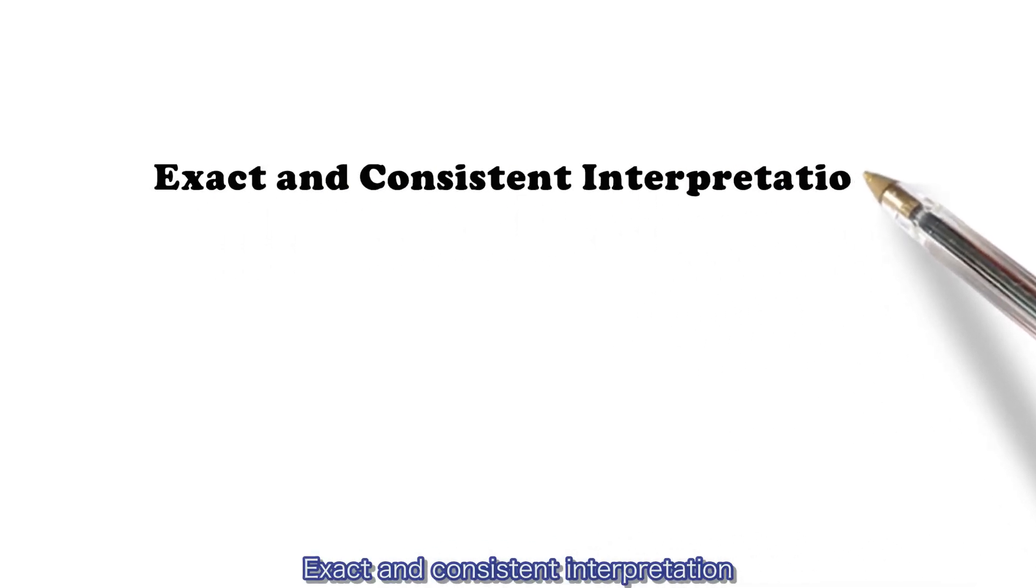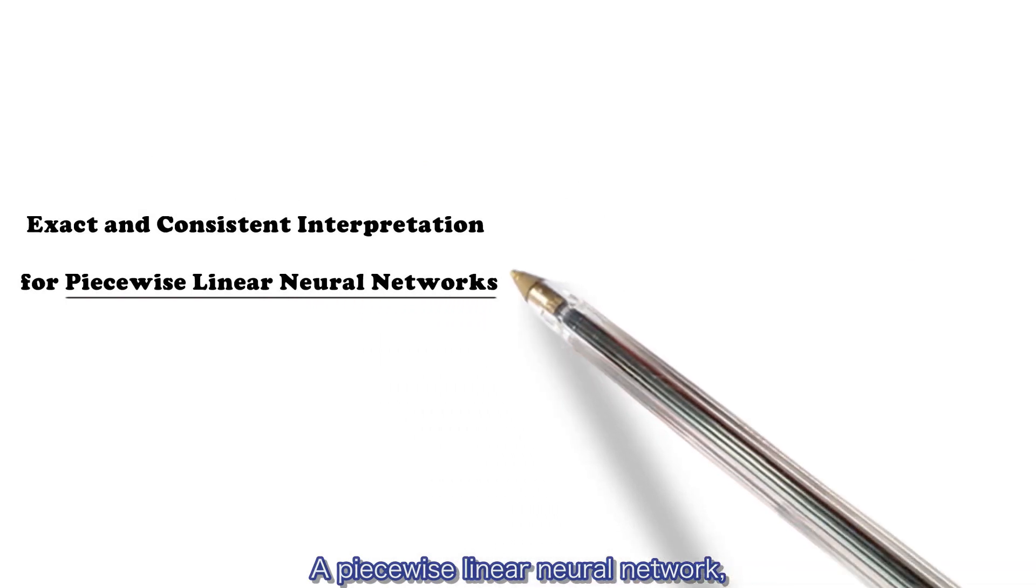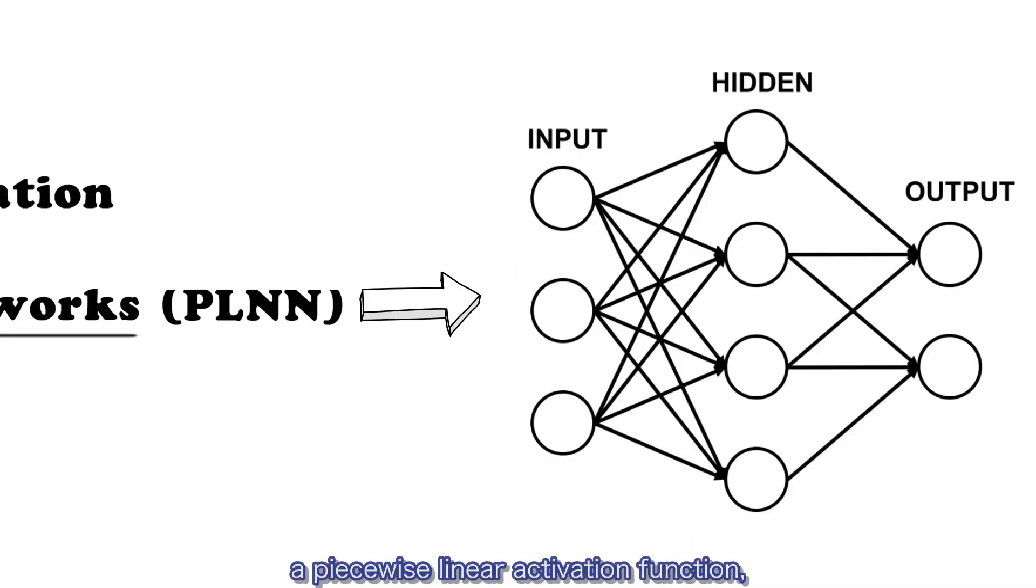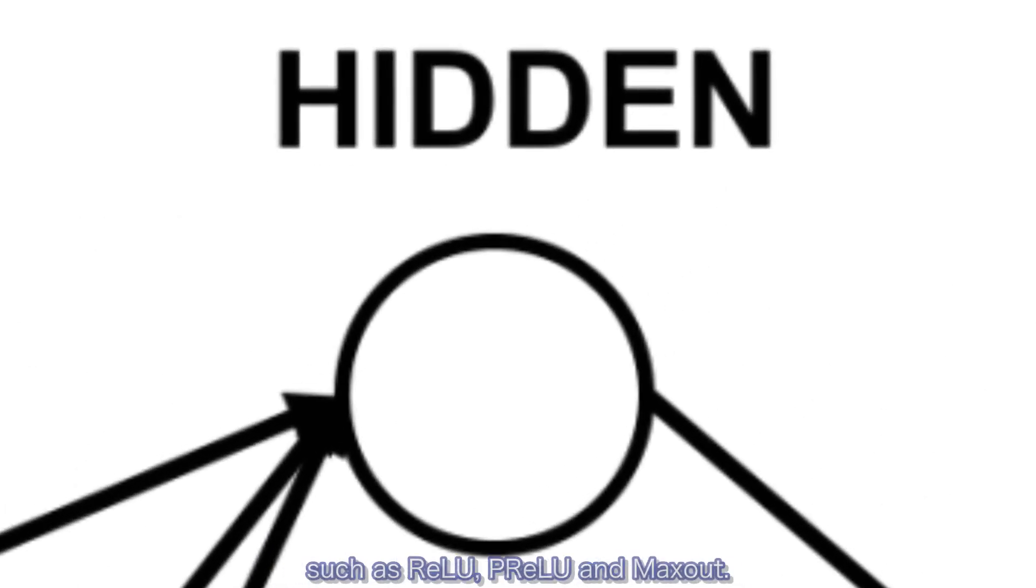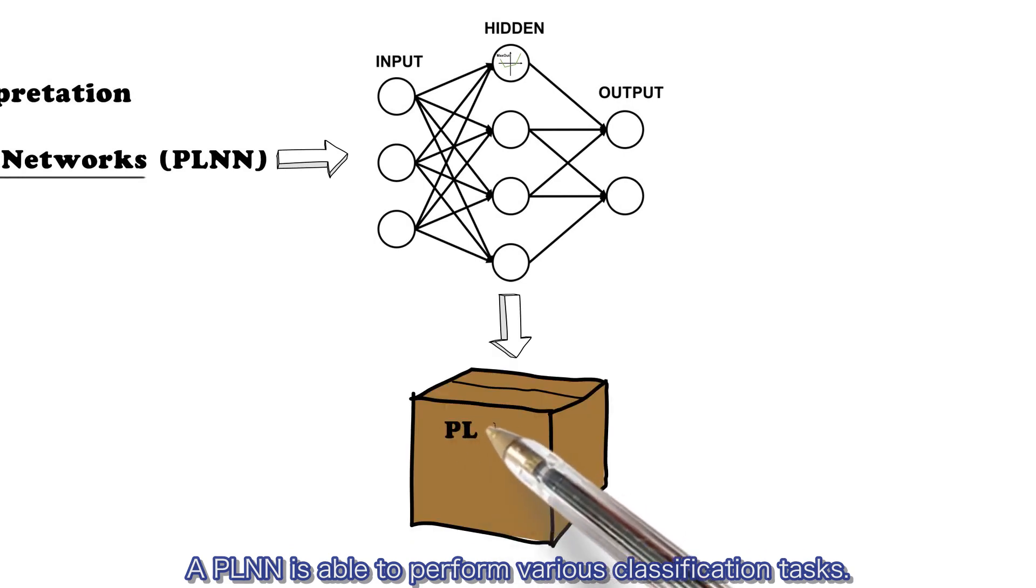Exact and consistent interpretation for piecewise linear neural networks. A piecewise linear neural network, also known as PLNN, is a neural network that adopts a piecewise linear activation function, such as ReLU, PireLU, and Maxout. A PLNN is able to perform various classification tasks.